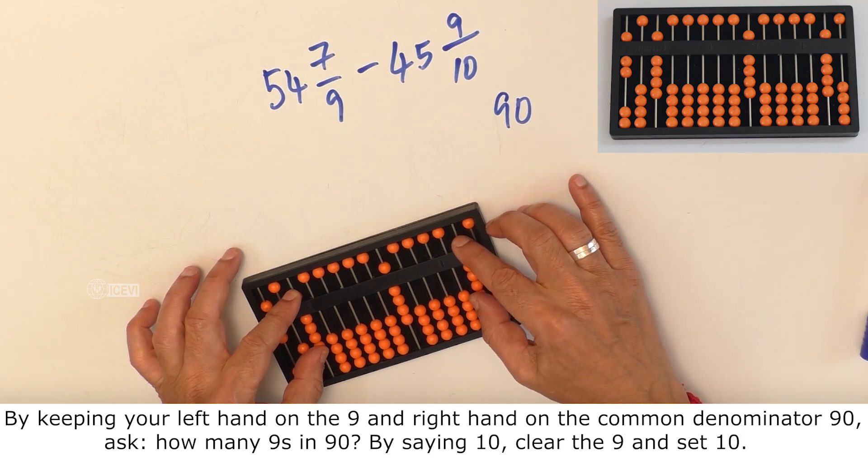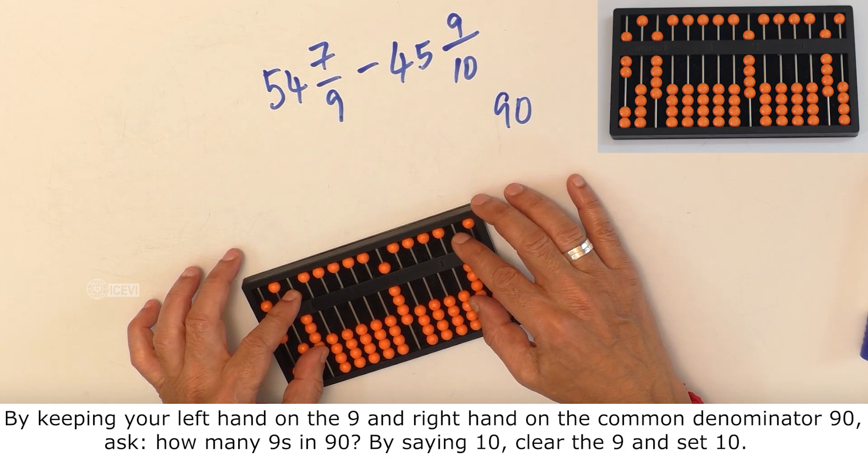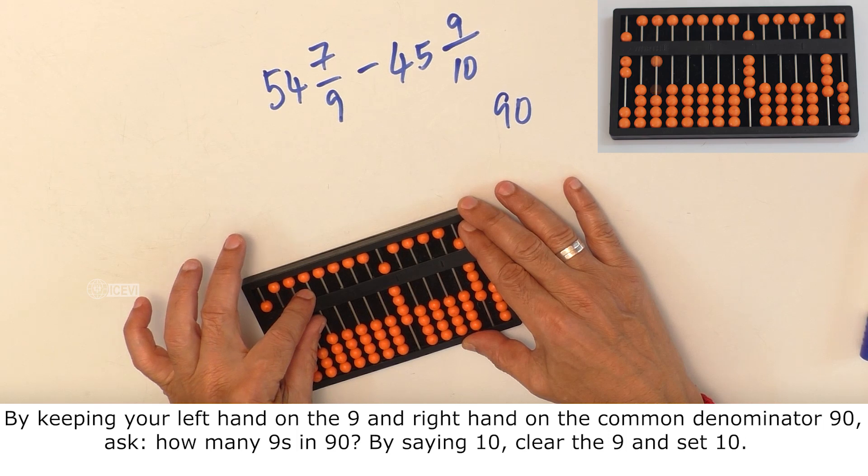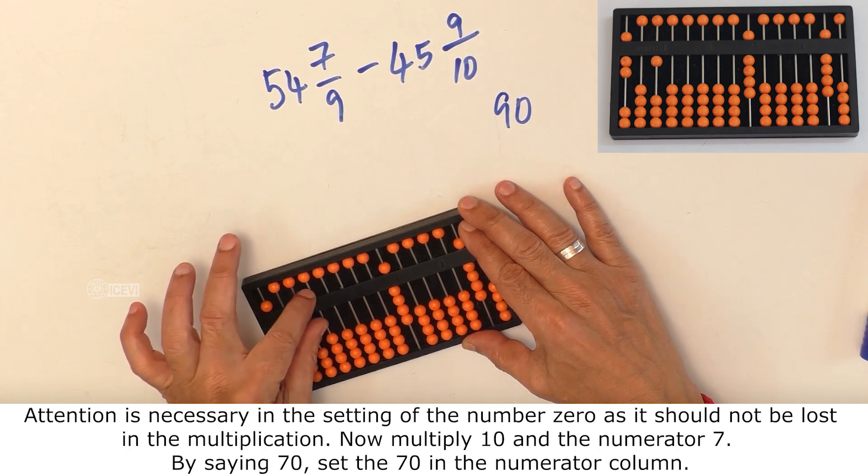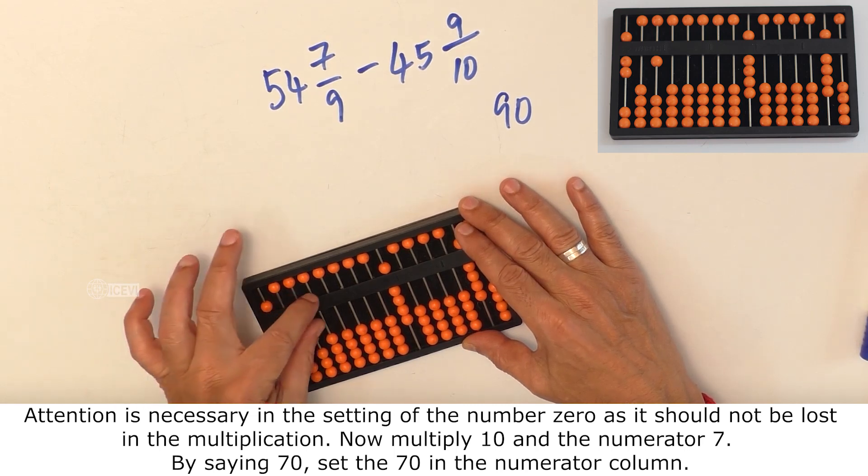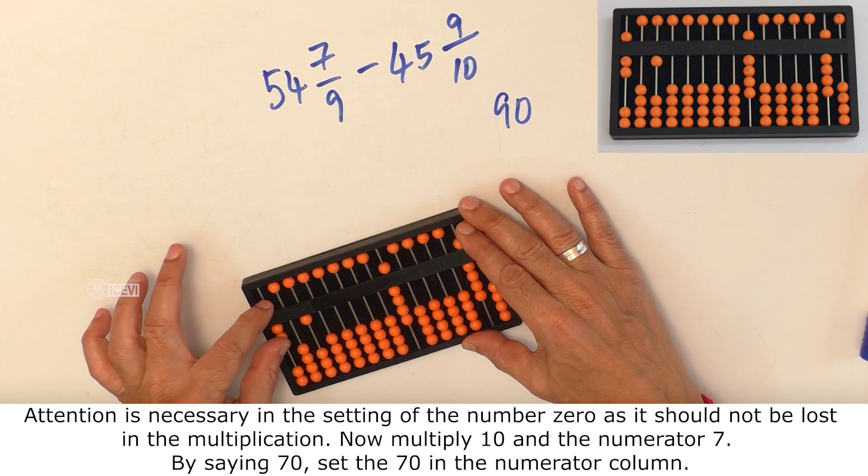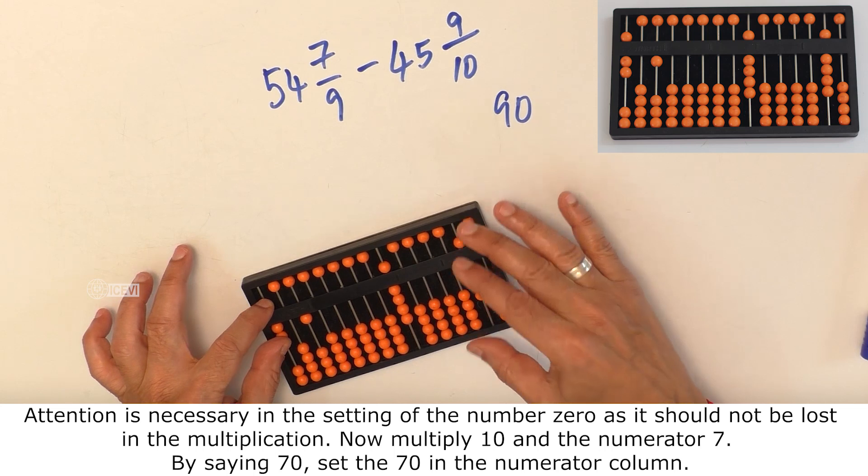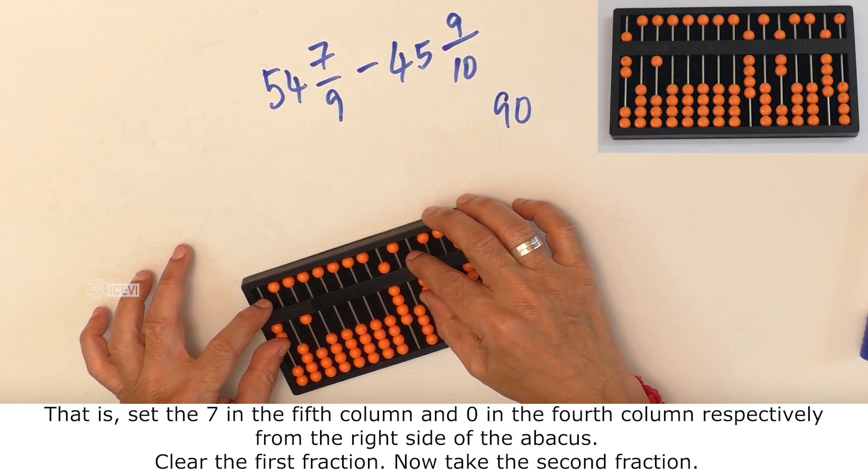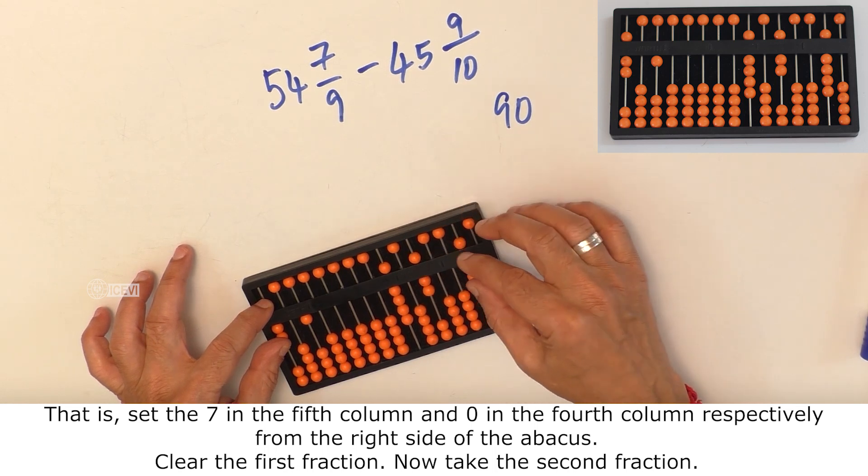By saying 10, clear the 9 and set 10. Attention is necessary in setting of the number 0 as it should not be lost in the multiplication. Now multiply 10 and the numerator 7 by saying 70. Set the 70 in the numerator column, that is 7 in the 5th column and 0 in the 4th column respectively from the right side of the abacus.